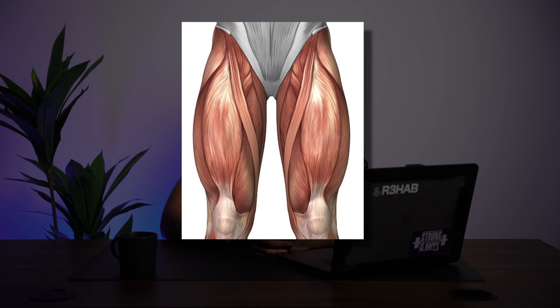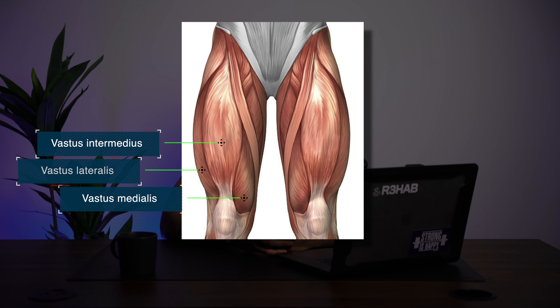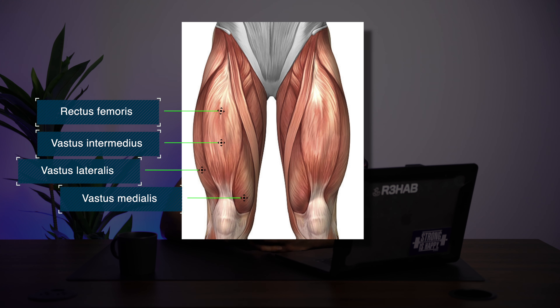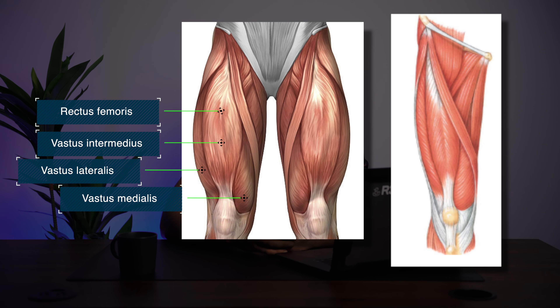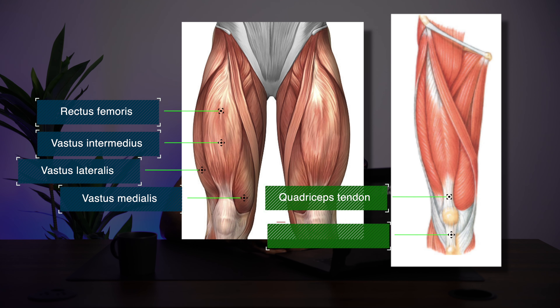The quadriceps, also known as the quads, are actually four different muscles: the vastus medialis, the vastus intermedius, the vastus lateralis, and the rectus femoris. All of these muscles run down the thigh and converge into one central quadriceps tendon, which inserts into the patella, which is then connected to the lower leg via the patellar tendon.